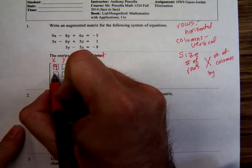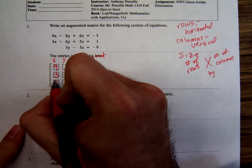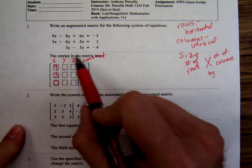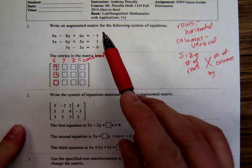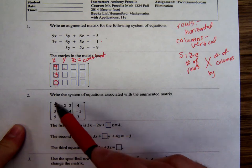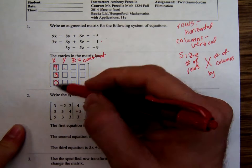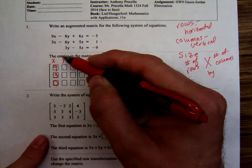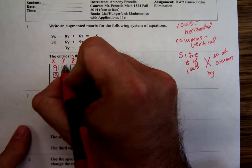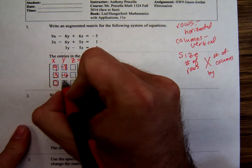In college algebra, those of you that had me, we had some problems where here's the system of equations. Write the augmented matrix and state the size. I'm writing the x coefficients in the x column, then the y coefficients: negative 8, negative 6, 3.